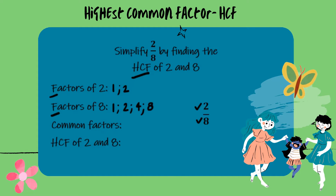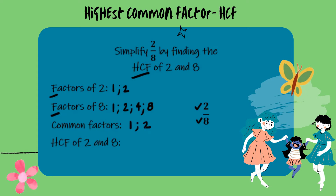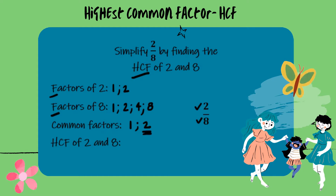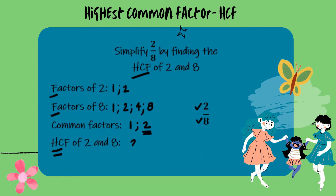Both 8 and 2 share the factors 1 and 2. But when we simplify fractions we are looking for the highest common factor. So the highest common factor of 2 and 8 would be 2.